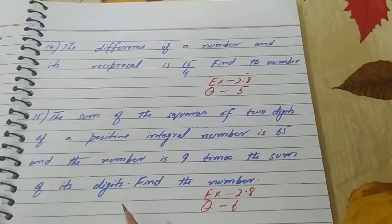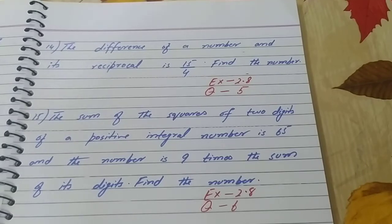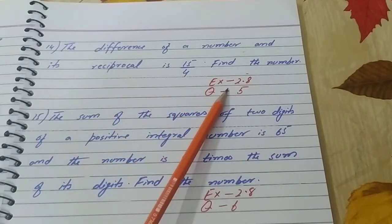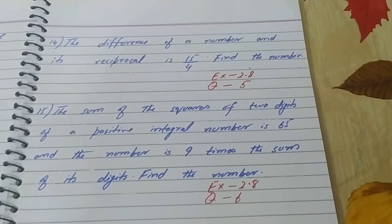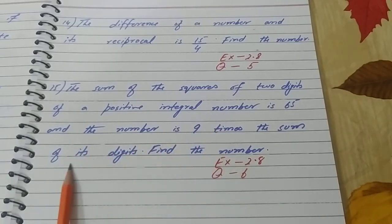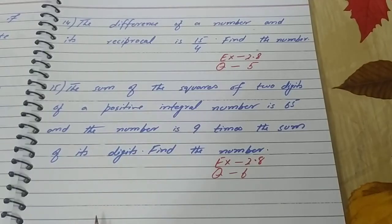The last two important questions in Chapter 2: Question number 14 — the difference of a number and its reciprocal is 15/4; find the number. Exercise 2.8, question 5. Question number 15 — the sum of the squares of the two digits of a positive integer is 65, and the number is nine times the sum of its digits; find the number. Exercise 2.8, question 5. These are the 15 most important questions in Chapter 2, Class 10 Maths.